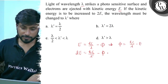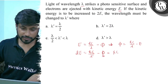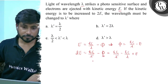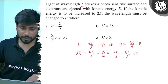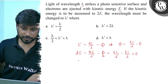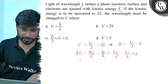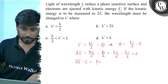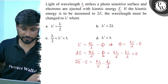We will take the φ value from the first equation. So, φ equals hc by lambda minus E. Now, let's substitute the φ value into the second equation.